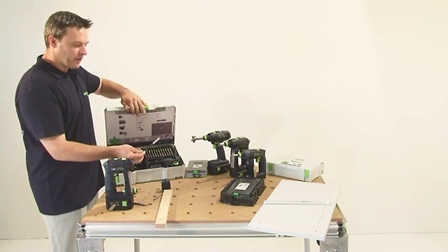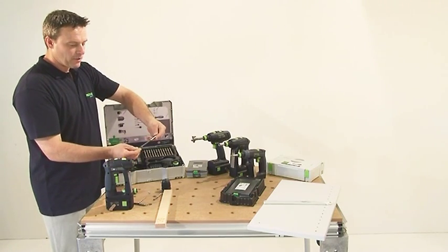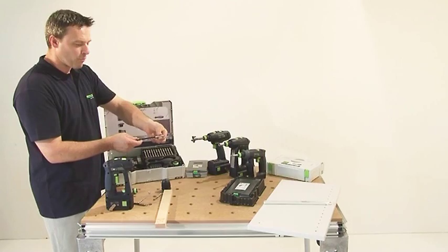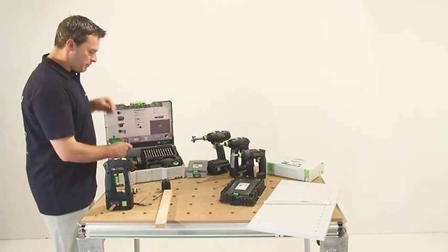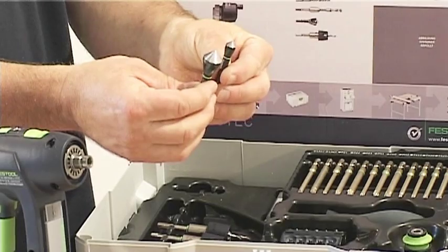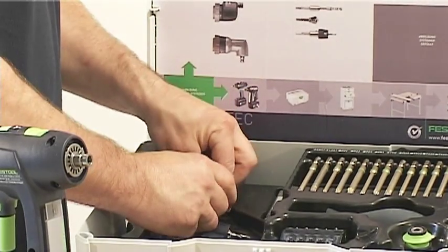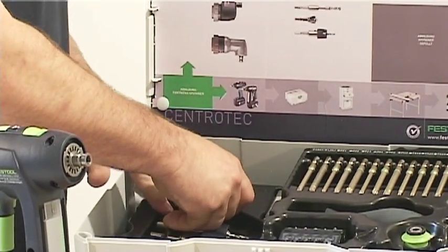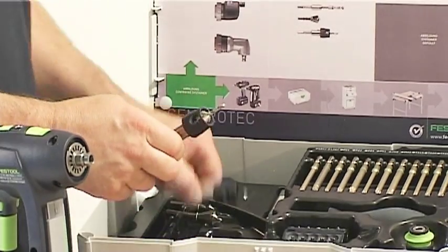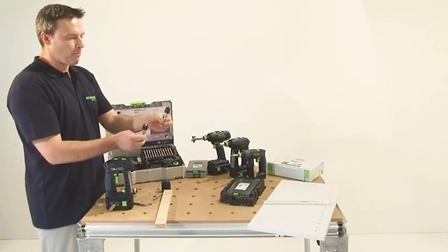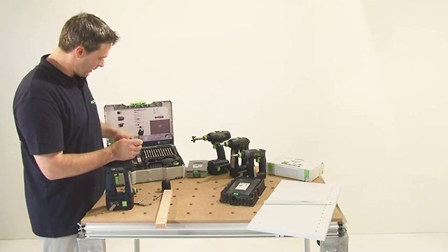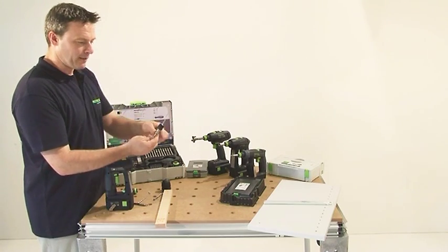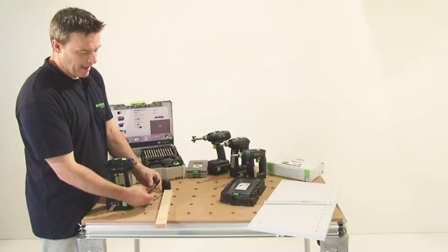In addition, I can work with several bit extensions in order to reach low-set screws. You also have the option to work with a countersink. Then you have two more tools. One for drilling with depth stop or line drilling and then also to drill with depth stop and countersink at the same time.